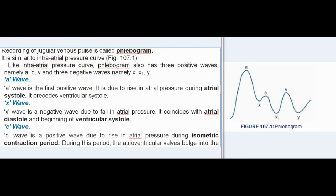A wave: A wave is the first positive wave. It is due to rise in atrial pressure during atrial systole. It precedes ventricular systole. X wave: X wave is a negative wave due to fall in atrial pressure. It coincides with atrial diastole and beginning of ventricular systole.